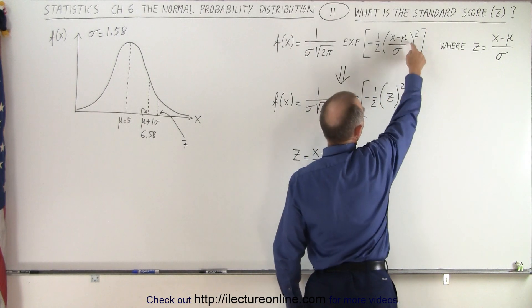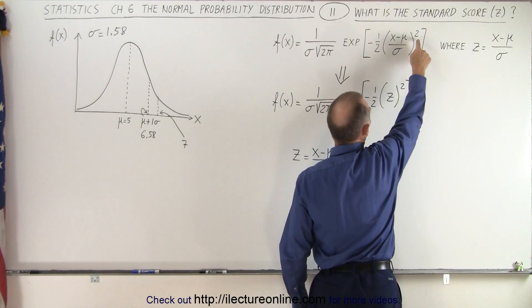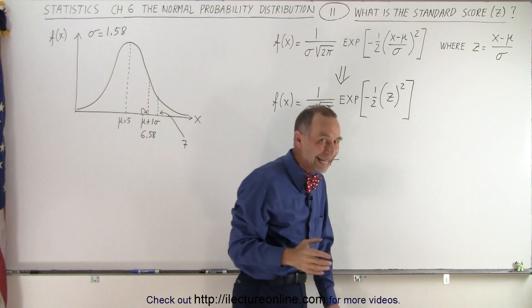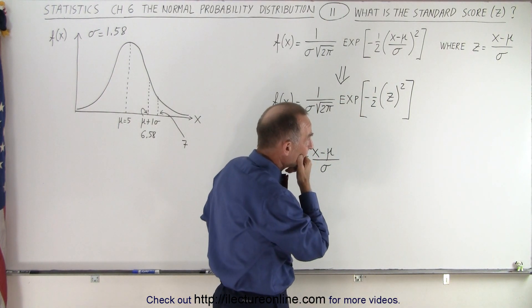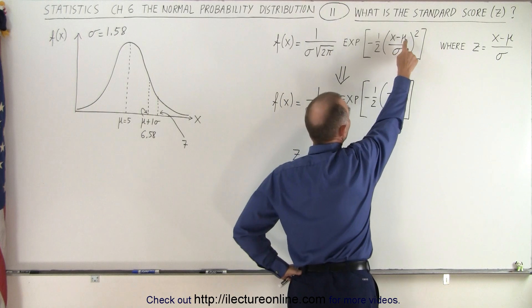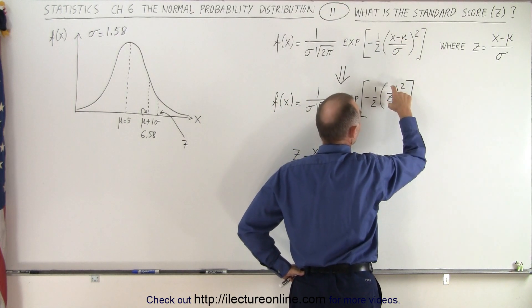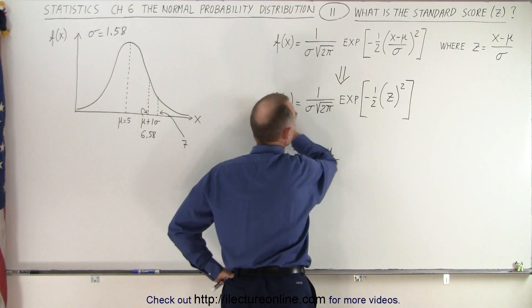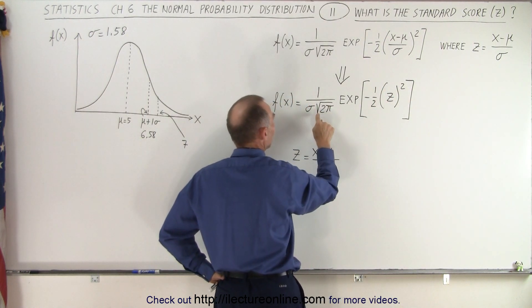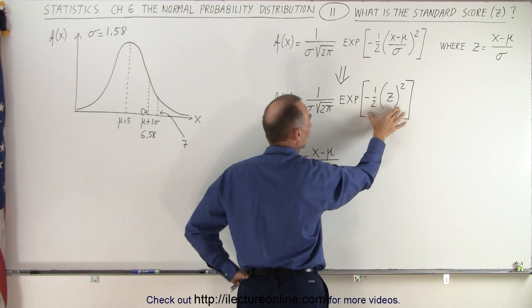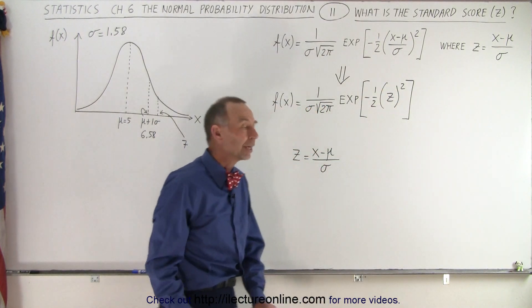Notice that's the quantity inside the parentheses here, which is squared, which is part of the exponent of the natural number E. If we then replace X minus the mean divided by sigma, we get simply Z. So the whole equation can now be written as 1 over sigma times the square root of 2π times E to the exponent minus 1 half Z squared.